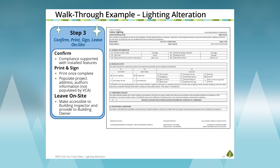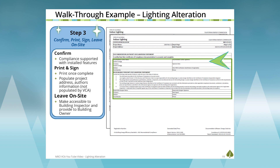Now we're on step three. This step requires putting some additional information into the forms. Due to California's privacy protection rights, the VCA will not collect address or direct contact information. Use a PDF tool to fill out the project address on each page of the compliance form. On the last page, sign as the documentation author, provide address, city, zip code, and phone number, and collect the signature of the responsible person — the liability signature as dictated by the Business and Professions Code Division 3, typically the licensed installing contractor, though the general contractor can sign if the installing contractor is no longer available.